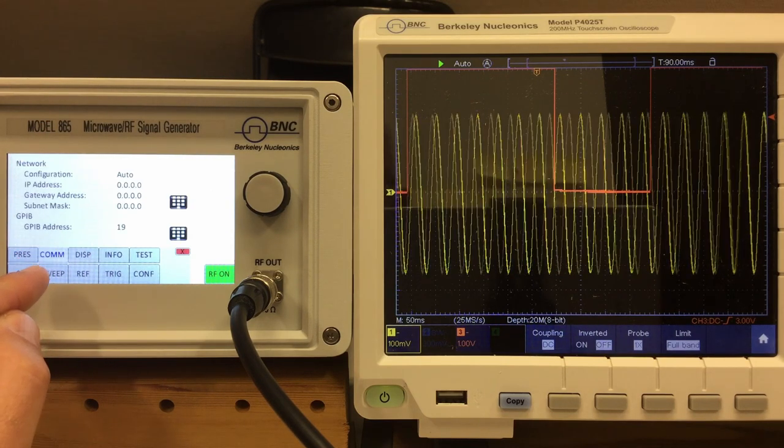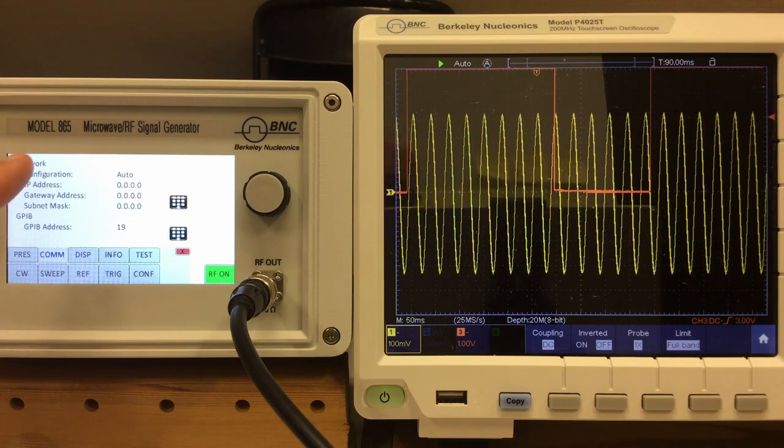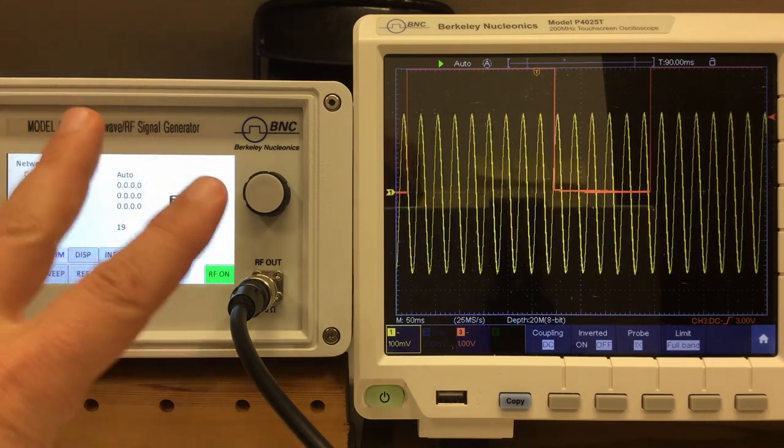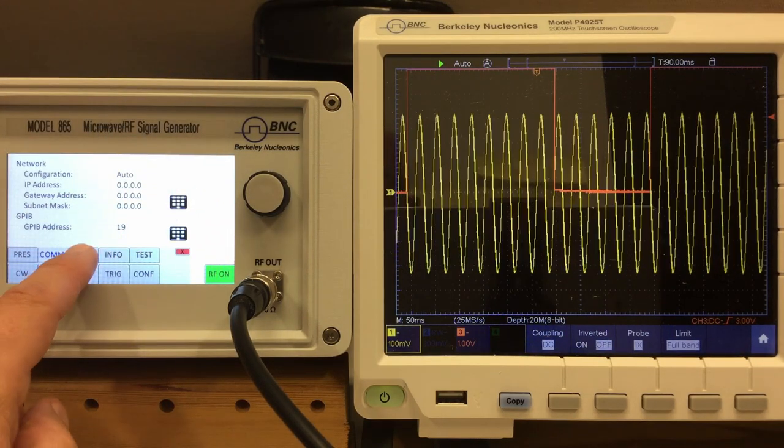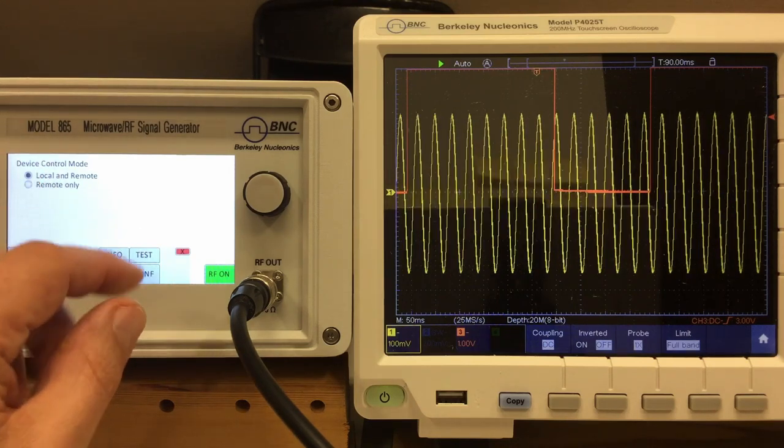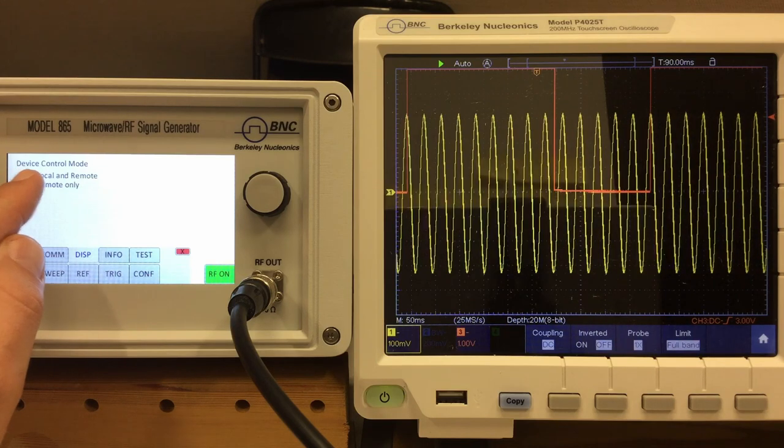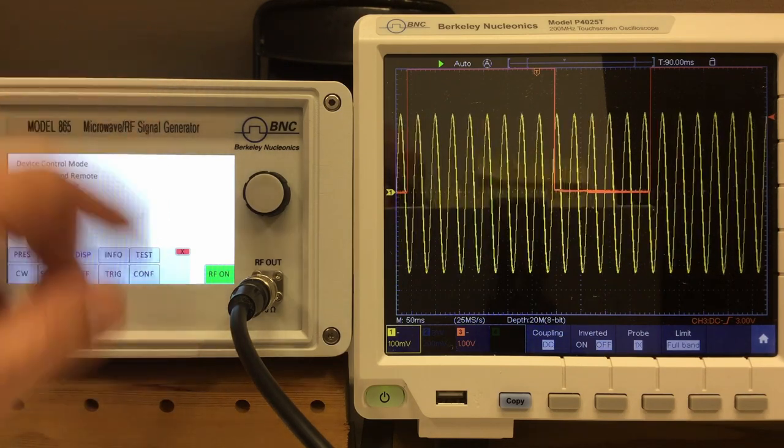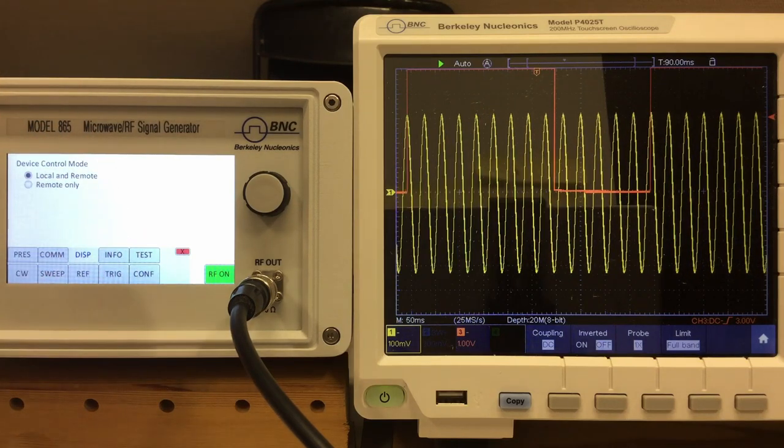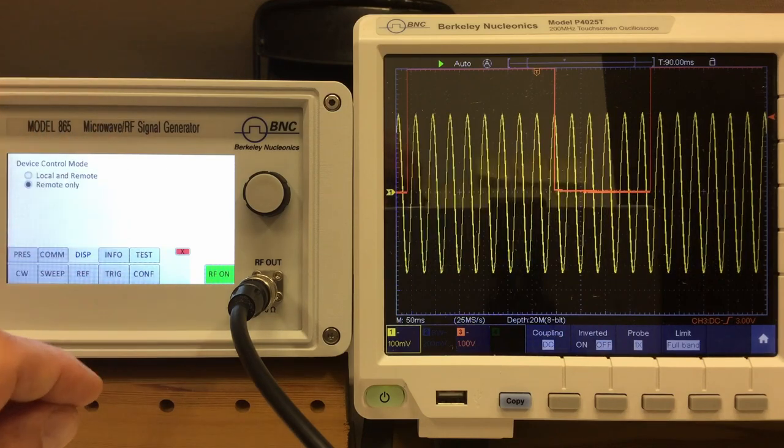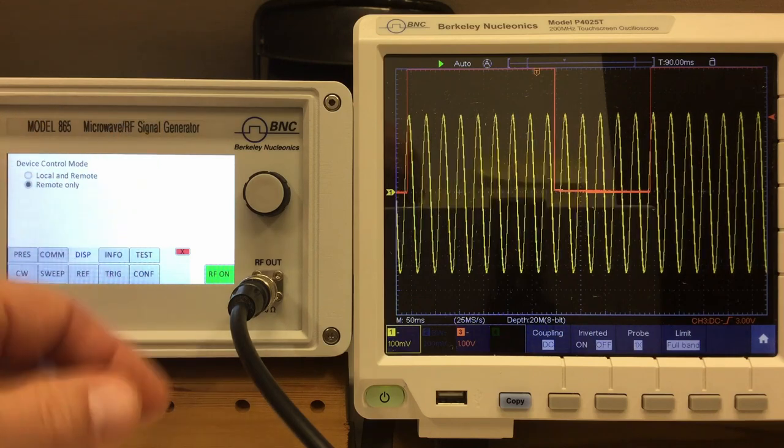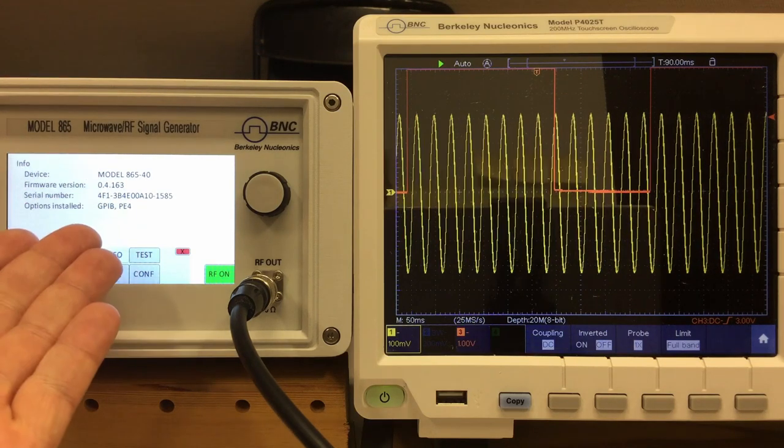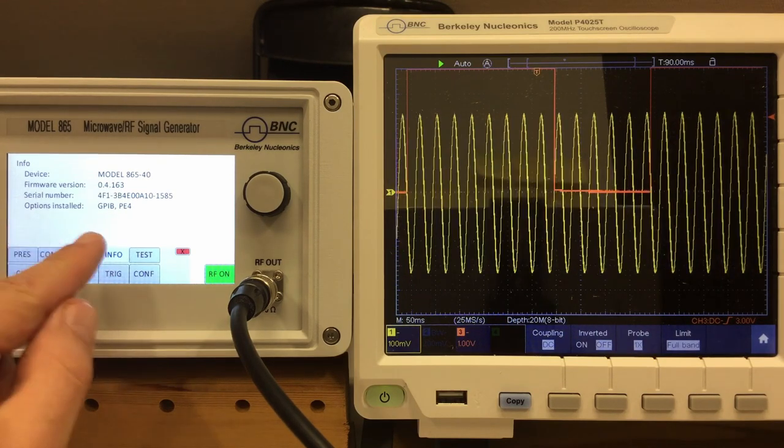We won't talk today about the communications menu. That's the network LAN communication and the GPIB address communication. That's for the second part using that unit remotely. Display is just a little fail-safe. So you can set your device control mode between local and remote. So I can use the touchscreen and control the thing via LAN or USB or GPIB, or I can say remote only. So nobody in the lab when this is centrally controlled will mess things up. Okay, let's leave that at local and remote for now.